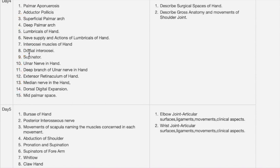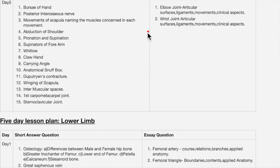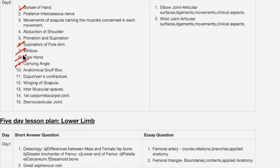For day five, the essay questions are elbow joint and wrist joint — both are important. Short answer topics include: supinator of forearm, which is the most important question; carrying angle; long head of biceps flow and down; union of scapula; and first carpometacarpal joint.